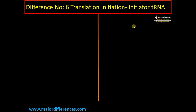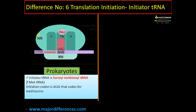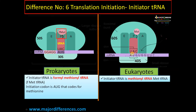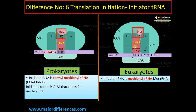Difference number six: initiator tRNA. Once both small and large subunits are joined on the mRNA, there is an A site (aminoacyl site), a P site, and an exit site. The initiator tRNA that recognizes the start codon AUG in prokaryotes is formyl-methionyl tRNA (fMet-tRNA) — it is formylated. In eukaryotes, the initiator tRNA is methionyl-tRNA and it is not formylated.